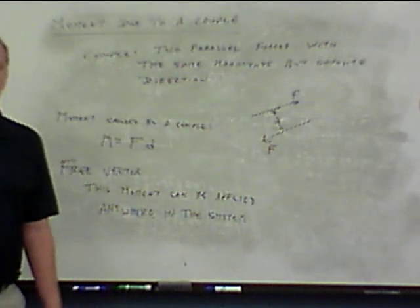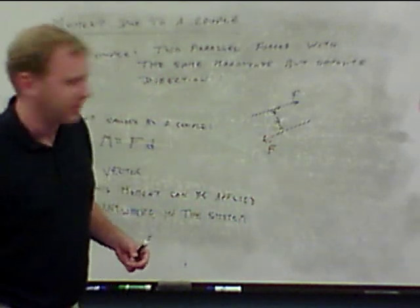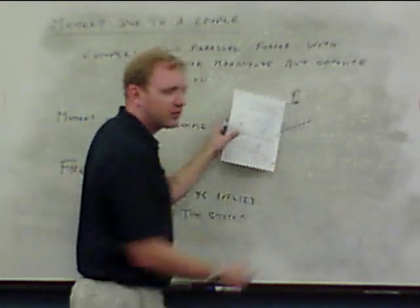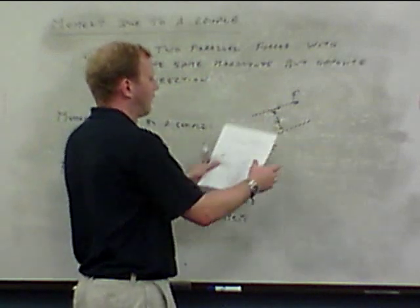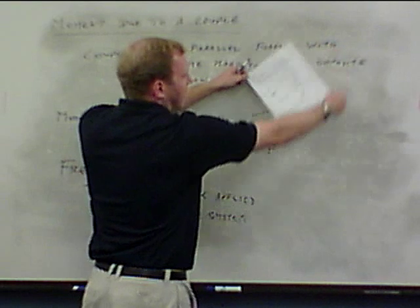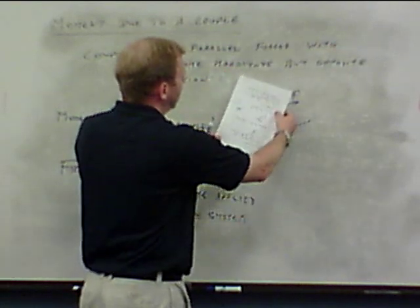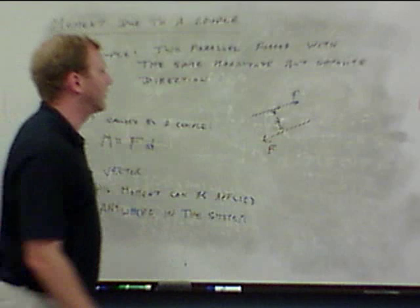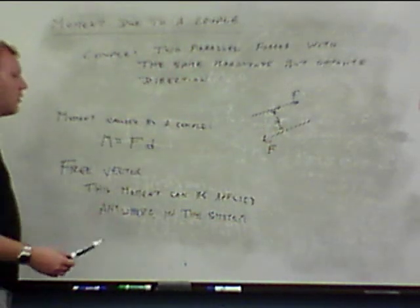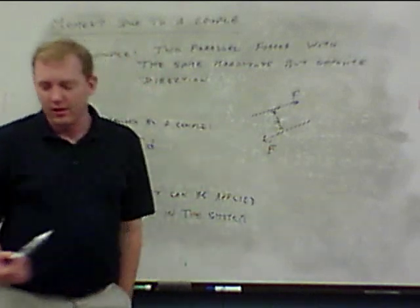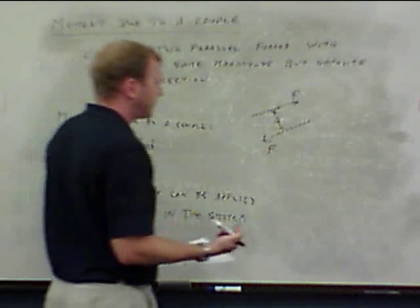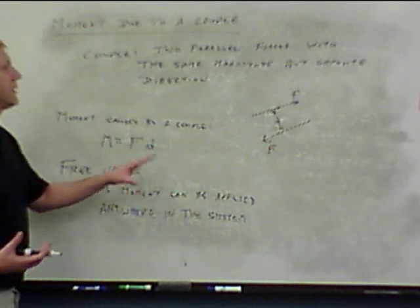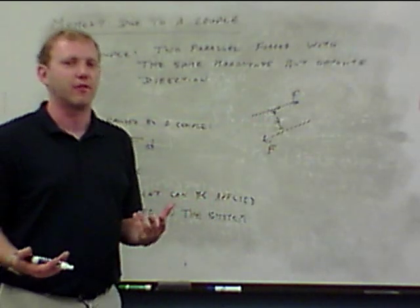The couple moment is a free vector — it can be applied anywhere in the system. Regardless of where you evaluate the moment within or outside the two force lines, the result is always F times d. Because the couple doesn't cause any translational motion, it's purely rotational. It doesn't matter where you apply the twisting force — it's still the same twist. This makes couple moments convenient: you can move them to wherever it's most convenient to solve the problem.